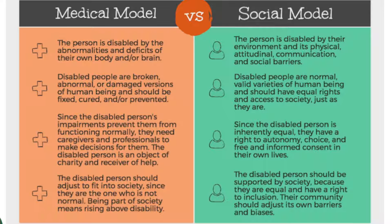In contrast, the social model of disability views the person as being disabled by their environment. Disabled people are considered normal and valid human beings with equal rights to society. They have a right to autonomy, choice, and consent in their lives. Disabled people are equal as human beings and have a right to inclusion.